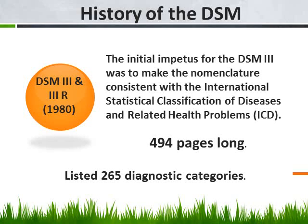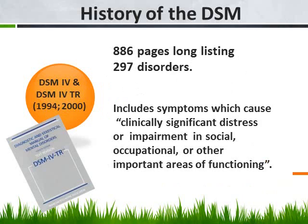It was a very important tool for psychologists to have a manual such as this. Notice how each edition gets longer and longer. The DSM-4 and the DSM-4TR, which we're using now, was originally published in 1994, is 886 pages long, and lists 297 disorders.